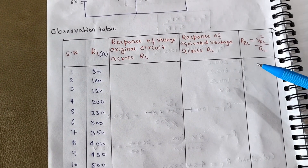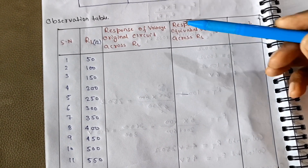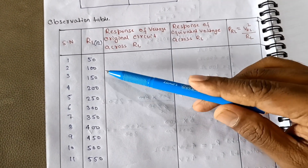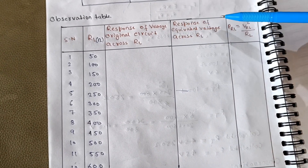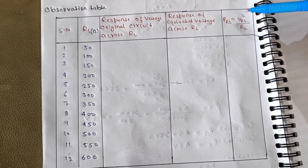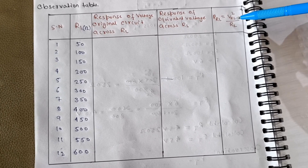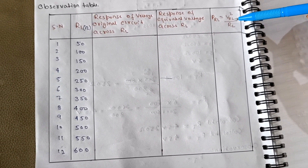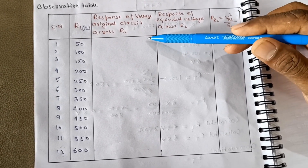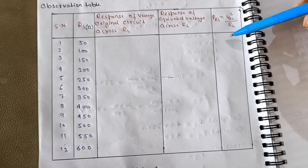This is the observation table we are using. The first column corresponds to load resistance in ohms. The second column corresponds to the voltage response of the original circuit across different load resistances drawn from the resistance box. The third column is the voltage response of Thevenin's equivalent circuit across the same load resistance. The last column is PRL, calculated using the formula VRL squared upon RL, where VRL is noted from the original circuit. You square the voltage, divide by the respective load resistance, and calculate the power.